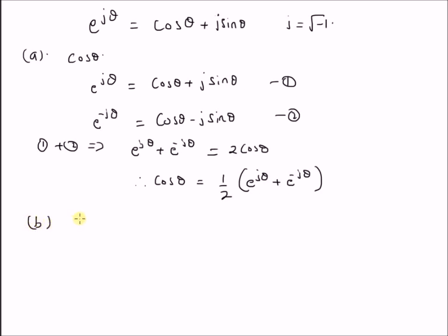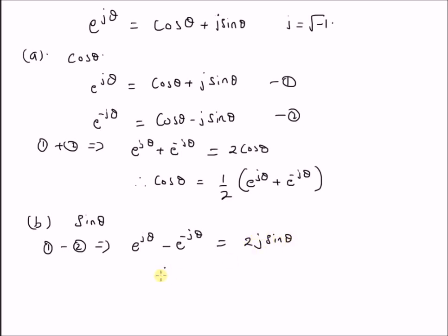Now let us look at the expression for sin θ. Simply by subtracting equation 2 from 1, we have e^(jθ) − e^(−jθ) = 2j sin θ. Therefore sin θ = (1/2j)(e^(jθ) − e^(−jθ)), that is the difference of e^(jθ) with its conjugate divided by 2j.